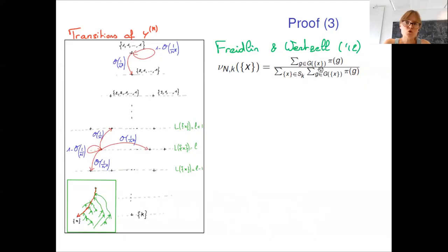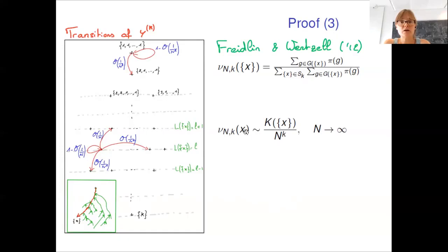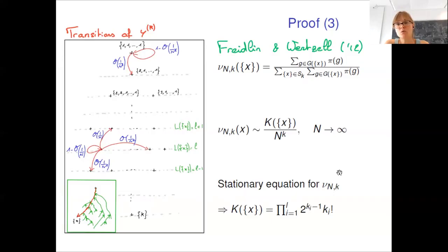This gives that the trees that will give the higher contributions are trees of this form. It's a path, a descending path from 1, 1, 1 to X and ascending trees that connect to this path. This gives that the stationary distribution mu NK of X is equivalent to K of X divided by N to the power of K when large N goes to infinity. And finally, the stationary equation for mu NK gives that K of X is of the right form. This is the end of the proof of the theorem.